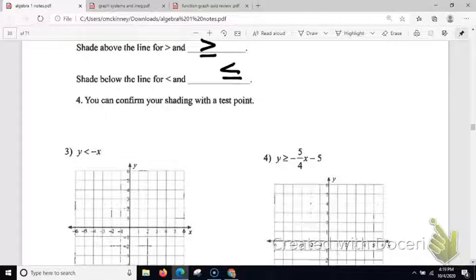And then you can always confirm your shading with a test point. The shading is also why it's important for the y to be by itself if it has a y, so it can be in slope-intercept form. Because if y is greater, it means that the part of the graph that is higher should be shaded. And if y is less, the part of the graph that is lower should be shaded.